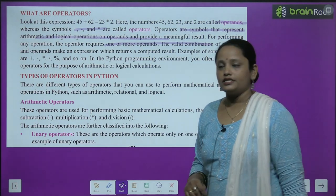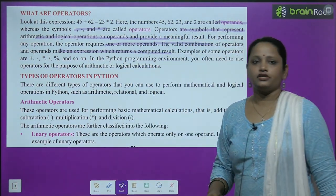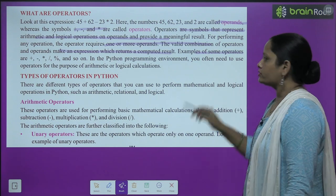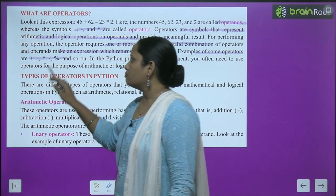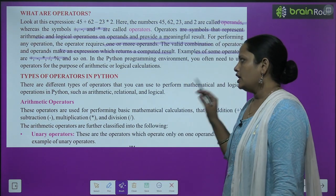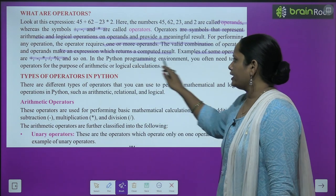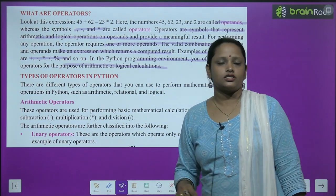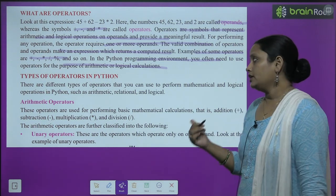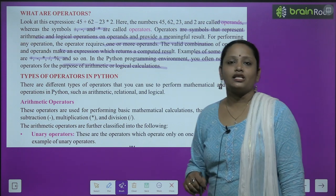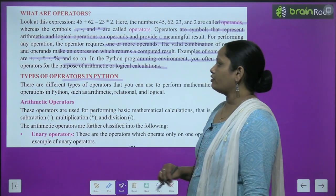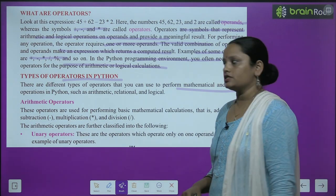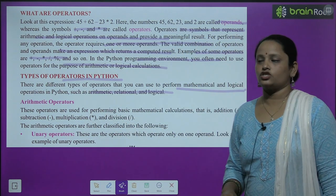Operators are symbols that represent arithmetic and logical operations on operands and provide a meaningful result. The valid combination of operator and operands makes an expression which returns a computed result. Examples of such operators are plus, minus, multiply, divide and percentage. In Python programming, you often need to use operators for arithmetic and logical calculations. There are different types of operators: arithmetic, relational and logical.